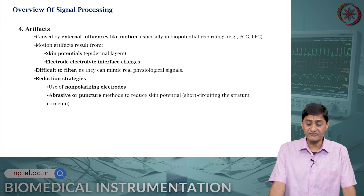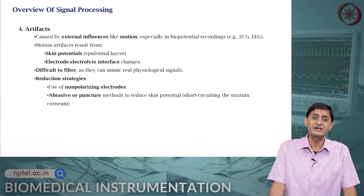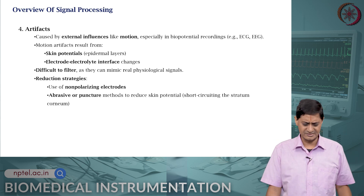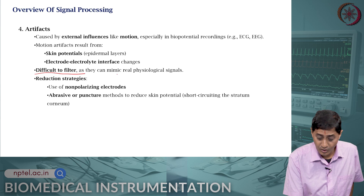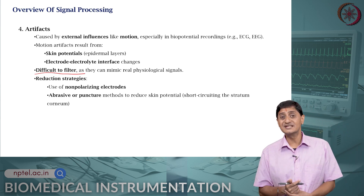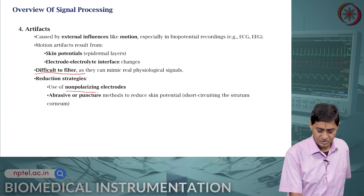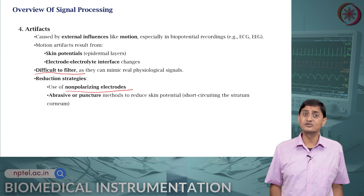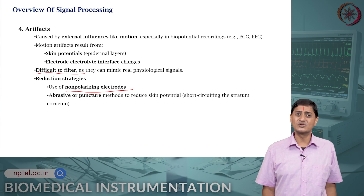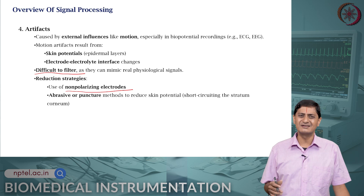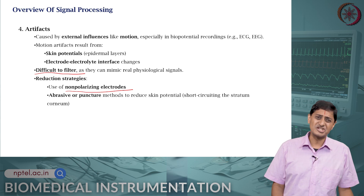Or artifacts — a common artifact is a motion artifact, especially in EEG recordings, biopotential recordings, ECG and EEG. This may happen because of skin potentials or changes in the electrode-electrolyte interface properties. It is quite difficult — actually it is impossible — to filter motion artifacts, because the frequencies at which artifacts occur and the signals of interest are in the same frequency range. To reduce this, you need to use non-polarizable electrodes for recording, or minimize skin interference by short-circuiting the stratum corneum by abrading and puncturing methods — a relatively uncomfortable procedure for the patient.